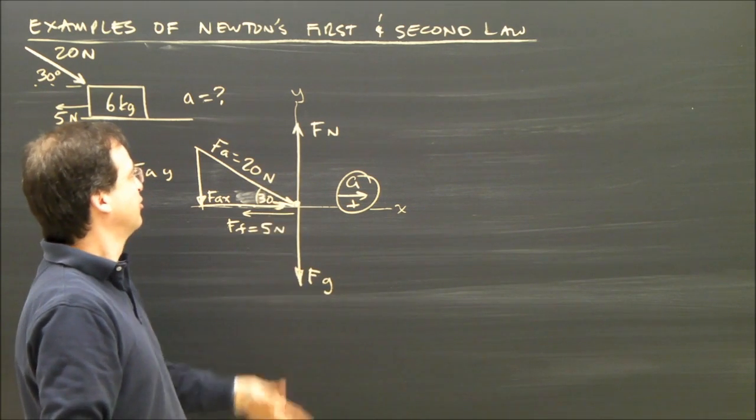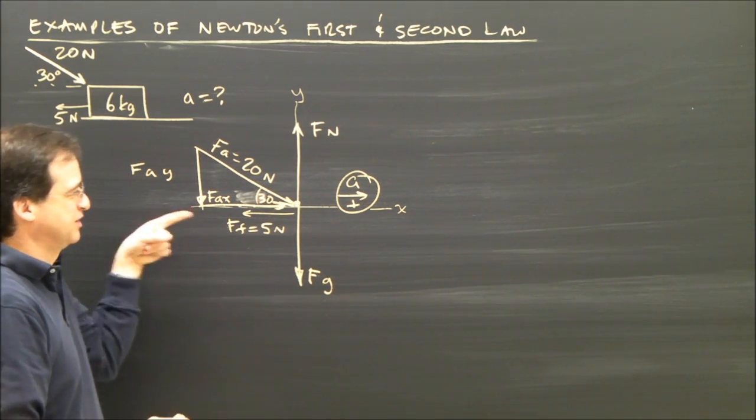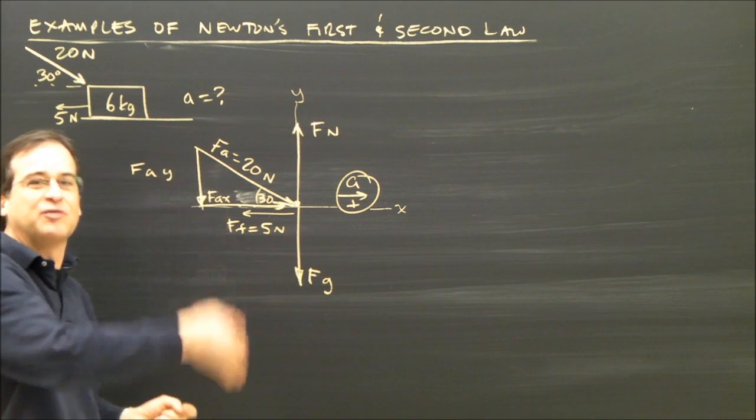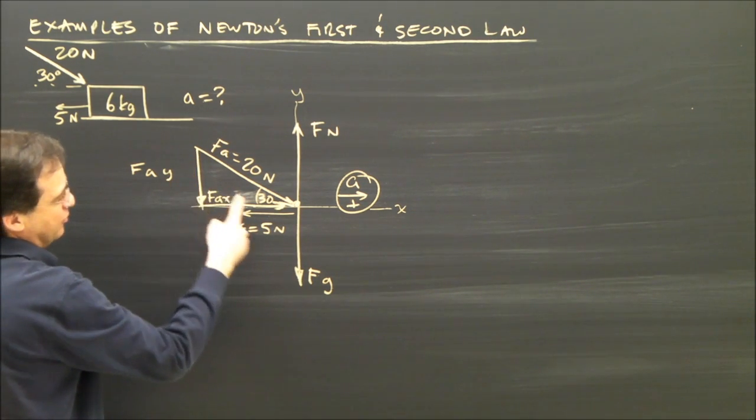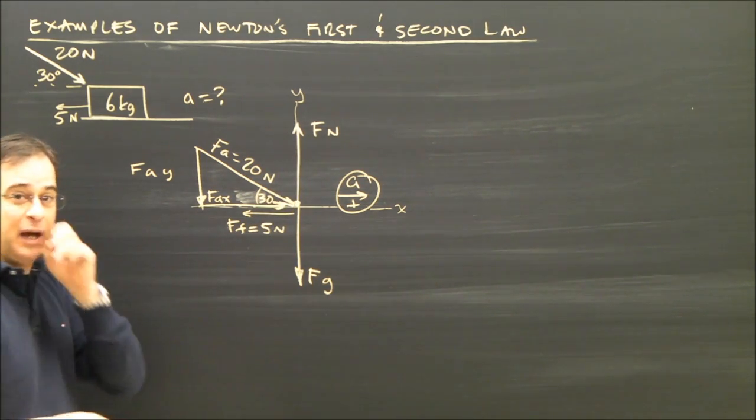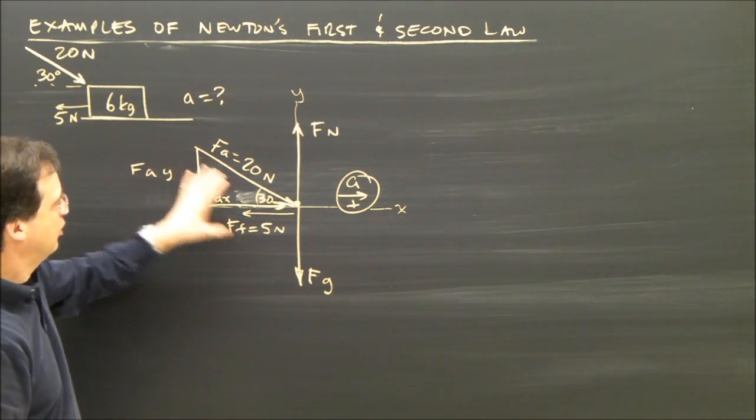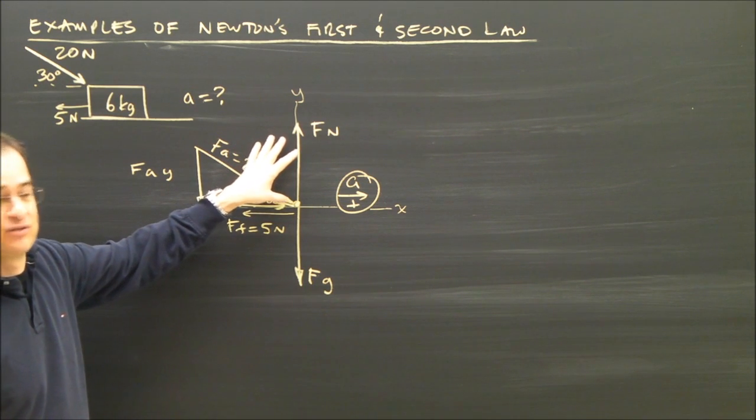In the up and down direction, it should add up to zero because if it's accelerating to the right, it's not accelerating up or down. I have this force down and this force down, and I have the normal force up.